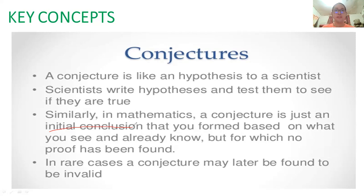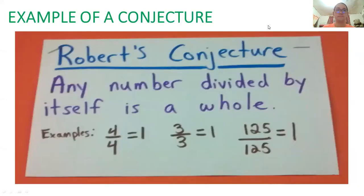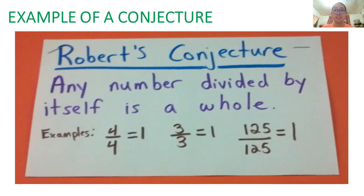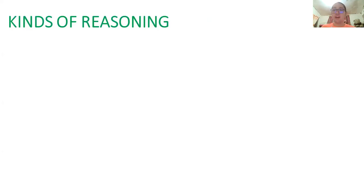Here is an example of a conjecture made by Robert: 'Any number divided by itself is a whole number.' Based on observation, four divided by four equals one, three divided by three equals one, 125 divided by 125 equals one — all whole numbers. Based on what we've seen and observed, the conjecture appears true, but it is only an initial conclusion.